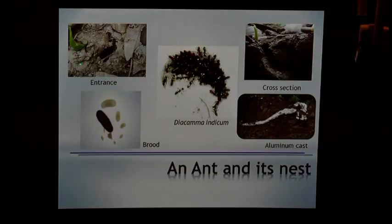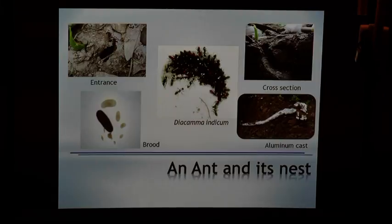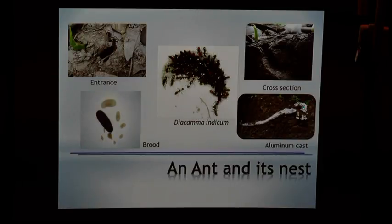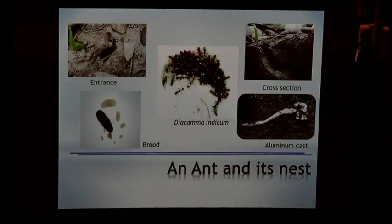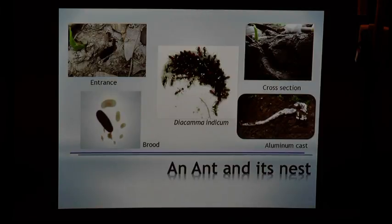If you're taking a walk around, you will see just a hole in the ground. This is what their entrance looks like — about a one centimeter diameter hole. Sometimes they choose to decorate it with dead caterpillar skin or a few leaves occasionally, but otherwise it's just a hole in the ground. If I take a section of this, I get a tunnel and a chamber — a relatively simple structure. If I want to look at their architecture, we can pour aluminum into this entrance — it's terrible for the ants, but it gives us the three-dimensional structure of their nest.